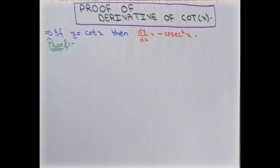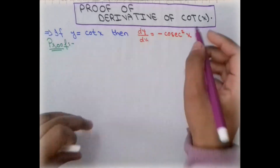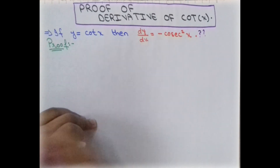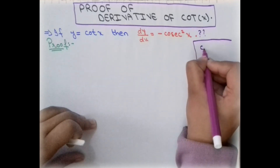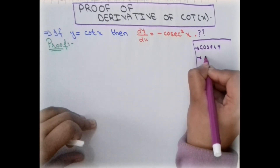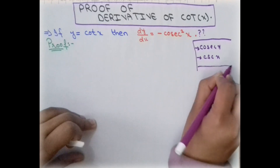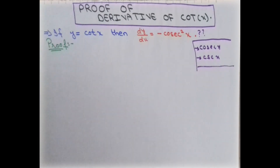Welcome back to Math Society. We are back with another proof of a trigonometric function, and today we discuss the cotangent of x. We want to prove that its derivative will be negative cosecant squared of x. First, for a simple notation note: we can write cosecant of x in standard notation, and also as csc(x). Both of these represent the same meaning.